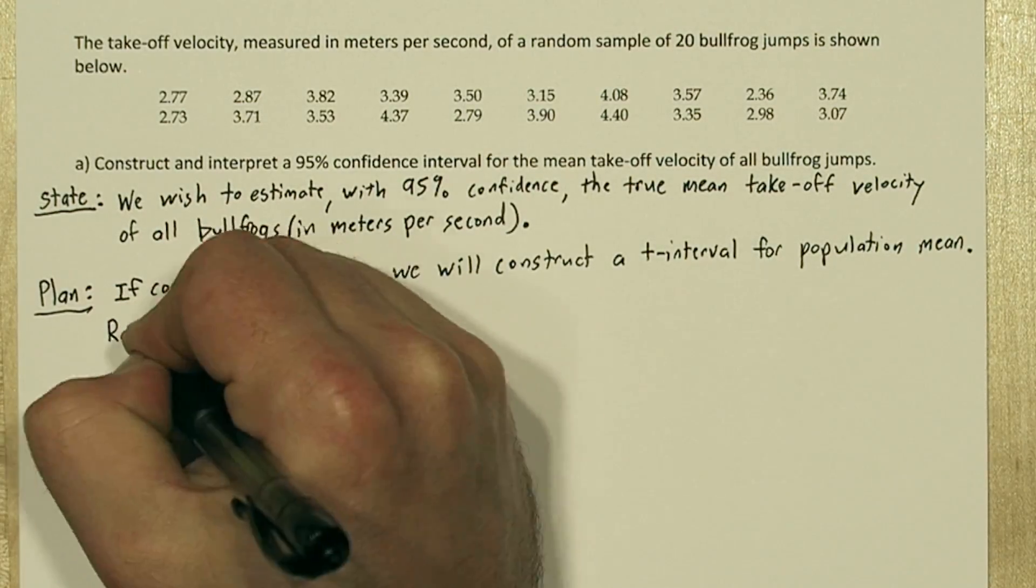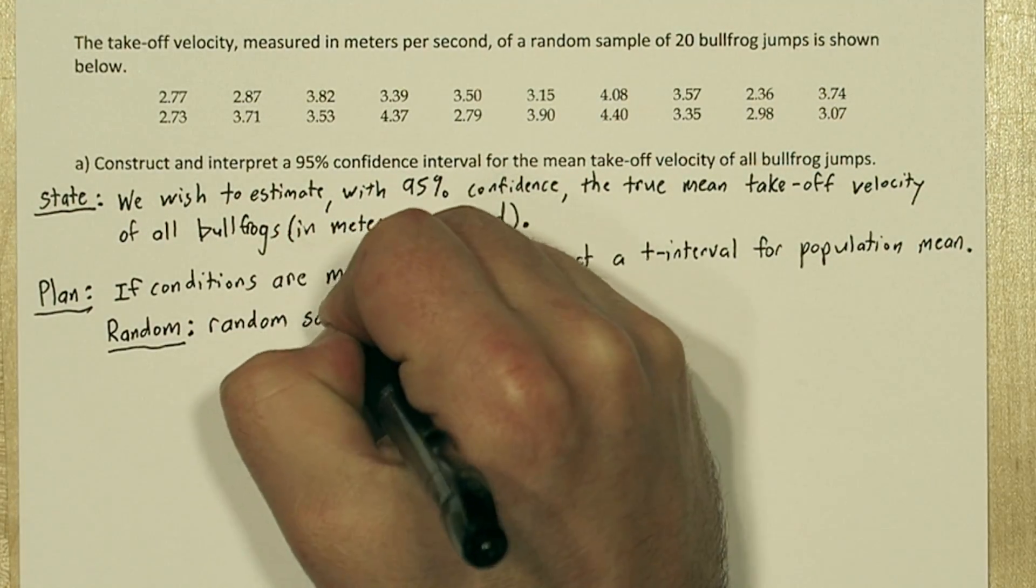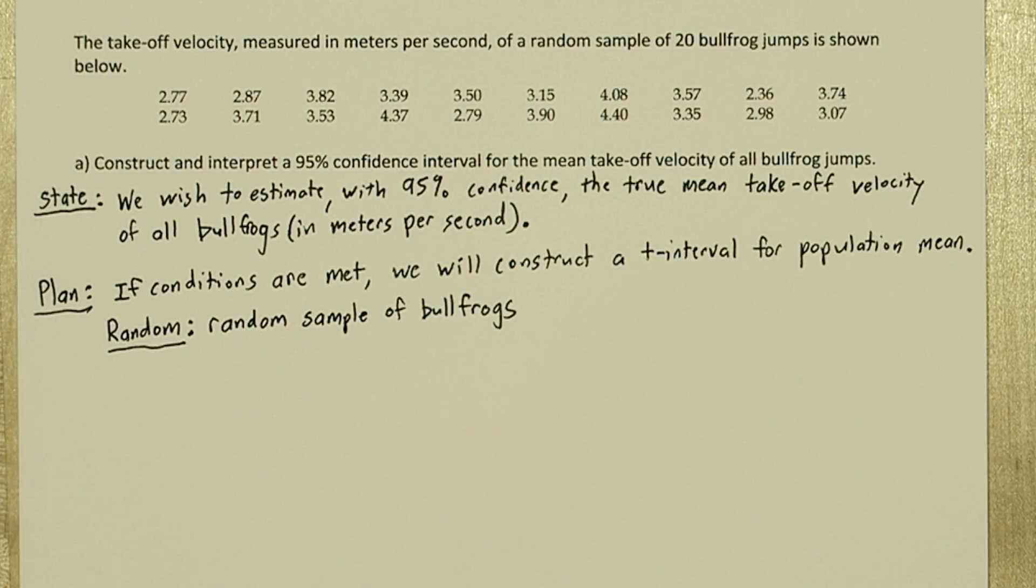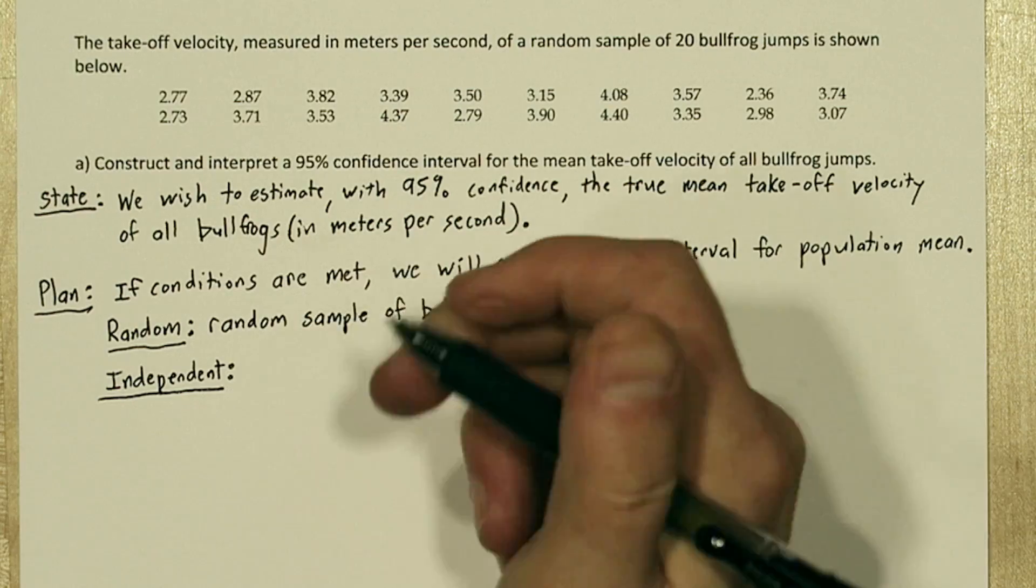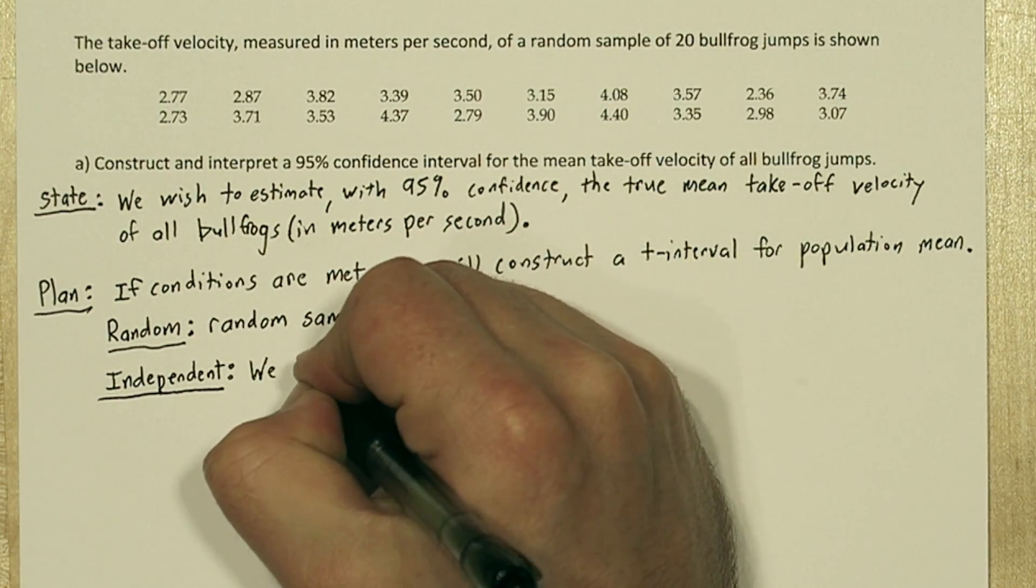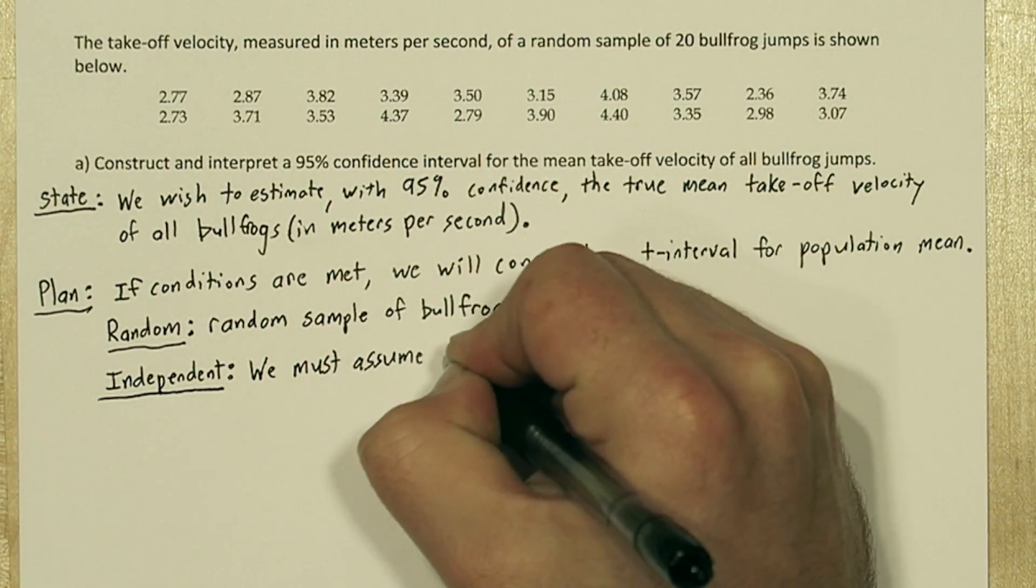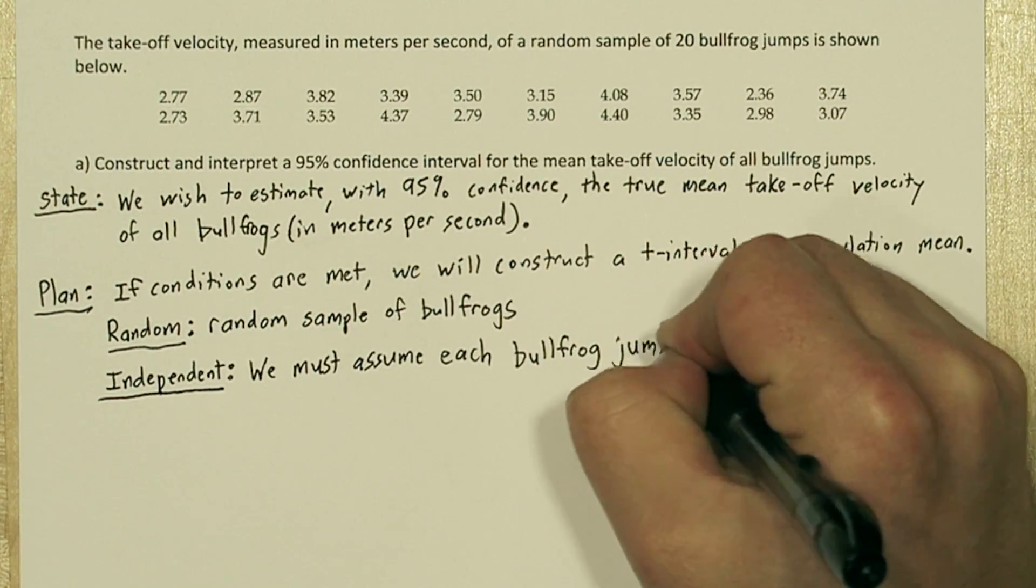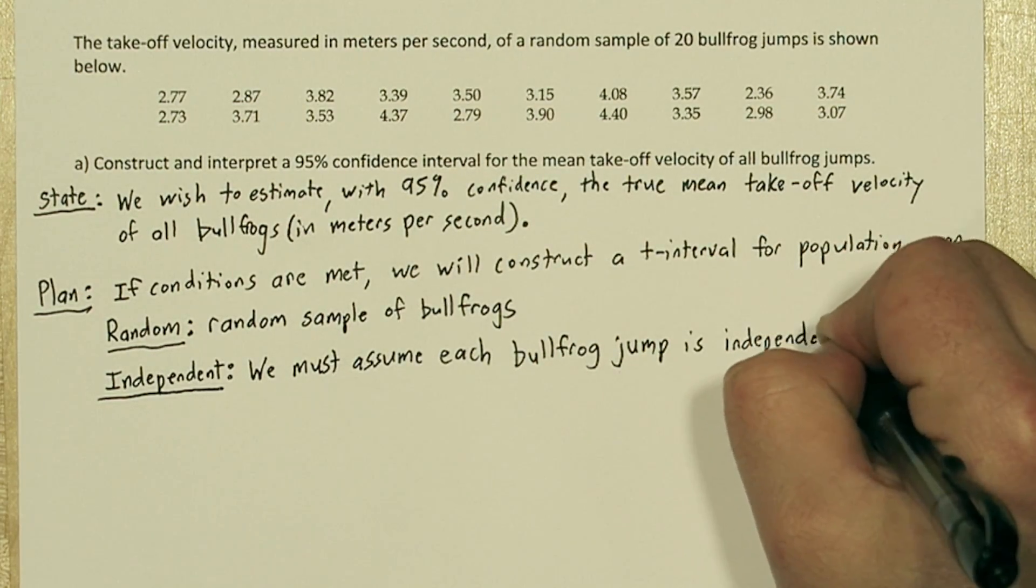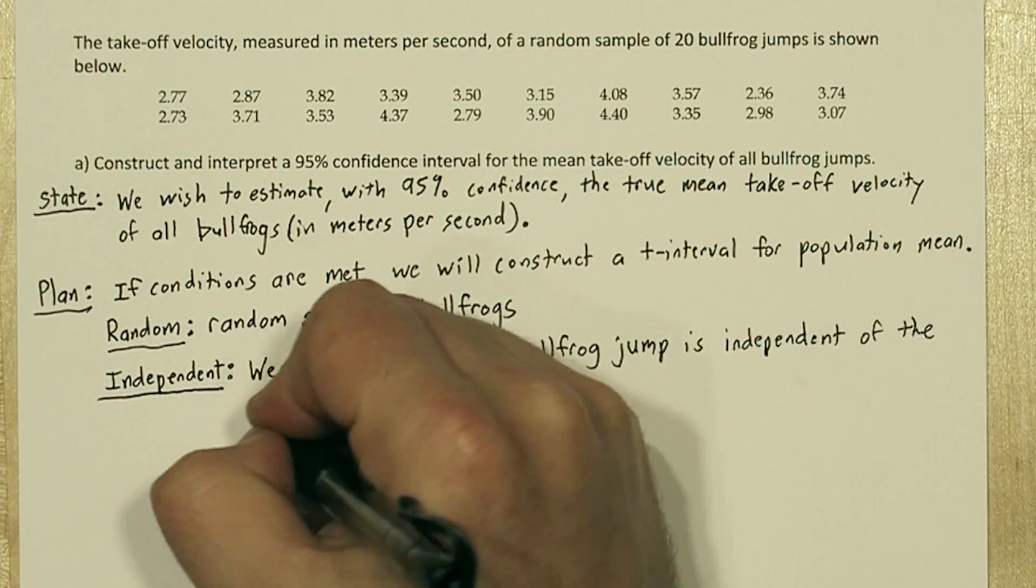For the random condition, it says right in the problem this was a random sample of bullfrog jumps. For the independent condition, we're not sampling, so we're not really interested in the 10% condition. Instead, we just need to assume that each of the bullfrog jumps is independent of the others, like when you're flipping a coin. Each coin toss is independent, so we're going to assume that each bullfrog jump is independent.